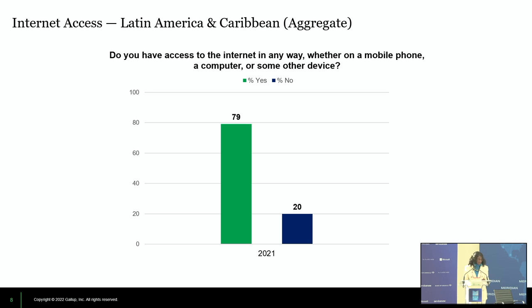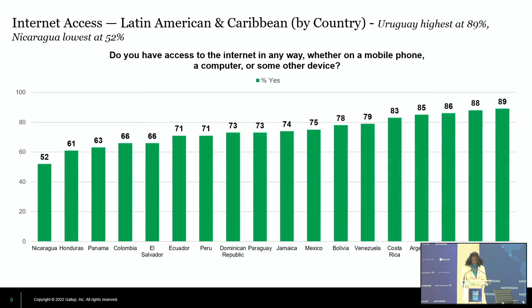Latin America and the Caribbean: an aggregate of 18 countries polled shows 79% access and connectivity, with 20% of the population lacking that. The bi-country view shows Uruguay at the highest percentage at 89% — who would have guessed it — and Nicaragua at the lowest at 52%, so there's quite a range.